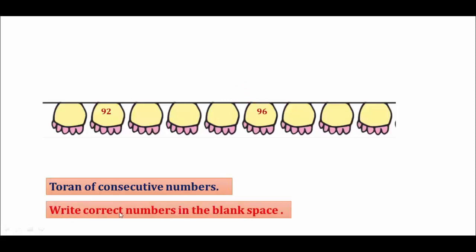Students write correct numbers in the blank space. Before 92 there is 91, then 92, after that 93, then 94, 95, then 96, after that 97, 98 and at last 99. This is a train. This is a train of consecutive numbers from 91 to 99.